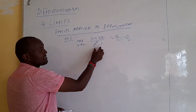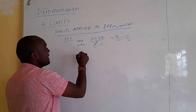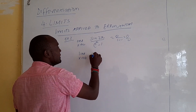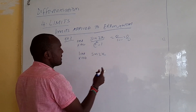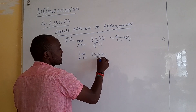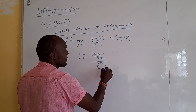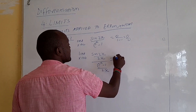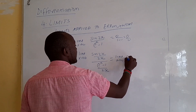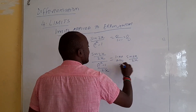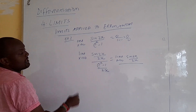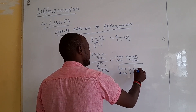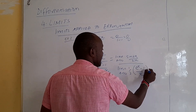We multiply both numerator and denominator by 2x to reshape the expression. Dividing both sides by 2x gives sin(2x)/(2x) in the numerator and (e^x - 1)/(2x) in the denominator. We then apply the quotient rule for limits, splitting into the limit of sin(2x)/(2x) over the limit of (1/2)(e^x - 1)/x.